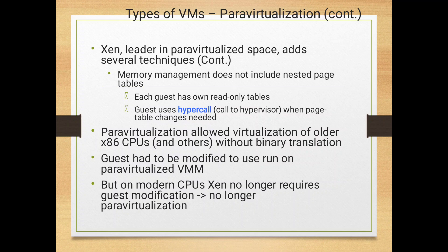Para-virtualization also has extended features. Memory management does not include nested page tables; instead each guest has its own read-only page table. Xen uses a hyper call when a page table change is needed. Para-virtualization also enables virtualization of older CPUs without binary translation, though the guest has to be modified to run on a para-virtualized virtual machine. On modern CPUs, Xen no longer requires guest modifications, so there is no large para-virtualization overhead.